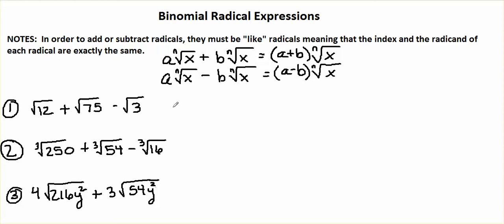In this lesson, we're going to take a look at adding radical expressions that haven't been simplified. So even though your radicals don't match, they might be able to be simplified so that they are like radicals. Let's take a look at these first three examples. The first example, we have radical 12 plus radical 75 minus radical 3.